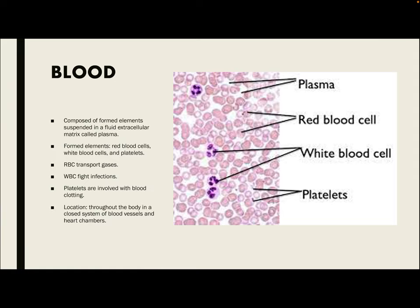Next, we have blood, which is composed of formed elements such as red blood cells, white blood cells, and platelets. Red blood cells transport gases, white blood cells fight infections, and platelets are involved in blood clotting. Blood is located throughout the whole body in the closed system between blood vessels and heart chambers.